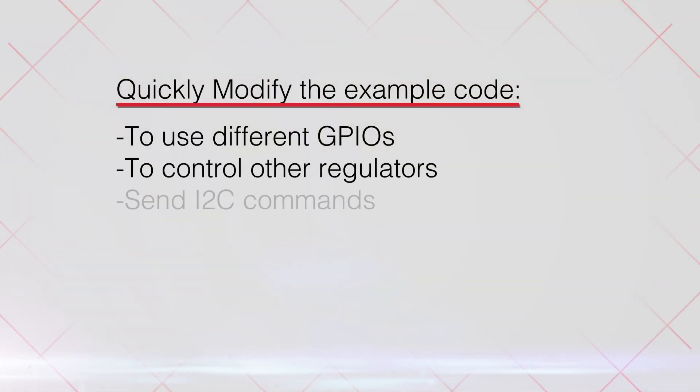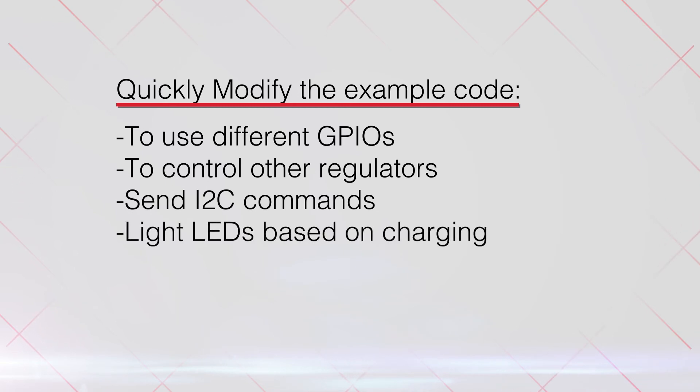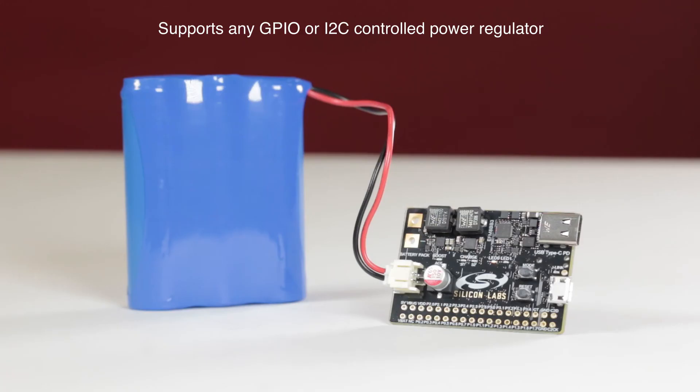The code for the PD controller is easy to use, and the developer can quickly go into the provided library and example code and modify it. The advantage of this PD controller is the flexibility that it gives. It supports any GPIO or I2C controlled power regulator. It can also use its ADC to measure external events, detect when devices are plugged and unplugged, and more.